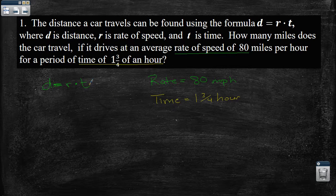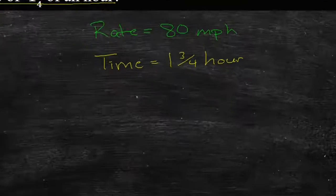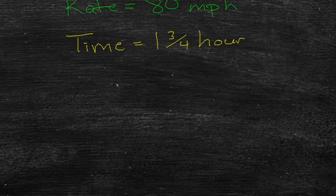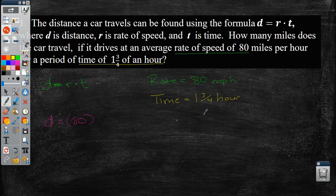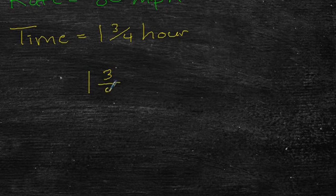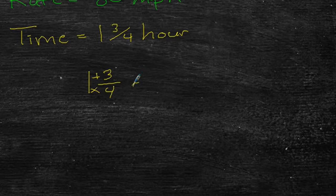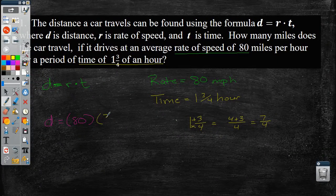So whenever we plug this in, we're just going to rewrite our equation here. We're going to plug in what they've given us. So I'm going to have D is equal to R. Now, in place of R, I'm going to put 80. And in place of time or the T, I'm going to put 1 and 3 fourths hour. But I'm not going to put 1 and 3 fourths. I'm going to change this into an improper fraction. So if you remember how to do this, if I have 1 and 3 fourths, what I do is I multiply 1 by the bottom number and then I add the top number. So I get 4 plus 3 over 4, which gives me 7 over 4.